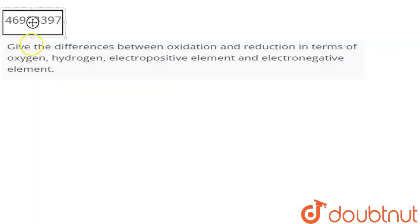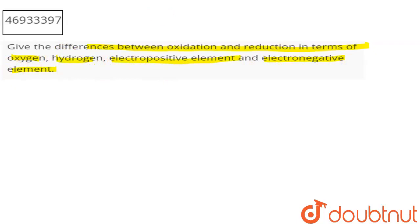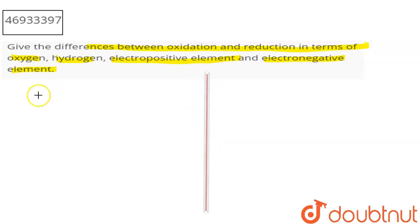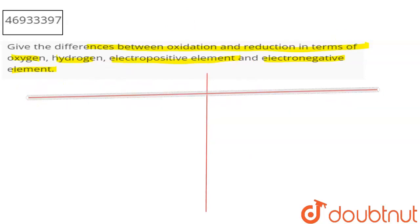The question is, you have to give differences between oxidation and reduction in terms of oxygen, hydrogen, electropositive element, and electronegative element. So basically, what is the difference between oxidation and reduction in terms of the following conditions given?